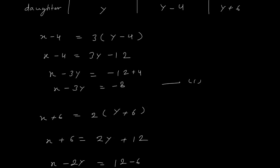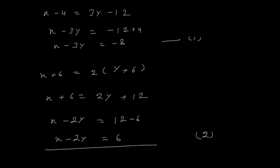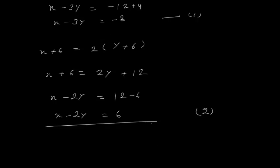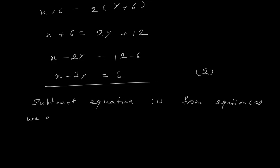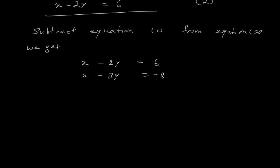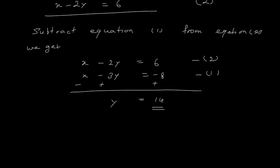So I have two equations. If I subtract equation 1 from equation 2: equation 2 is X minus 2Y equals 6, and equation 1 is X minus 3Y equals minus 8. When we subtract, X will cancel. I will get Y, and minus will become plus, giving me 14. So the value of Y is 14.